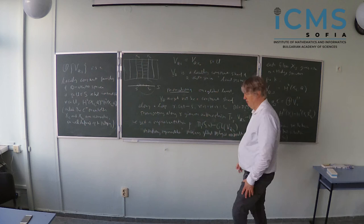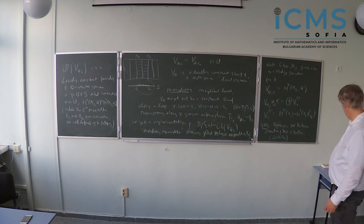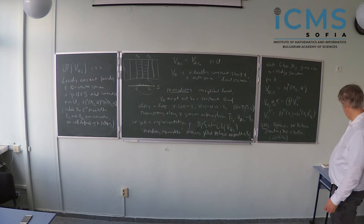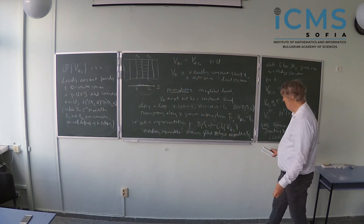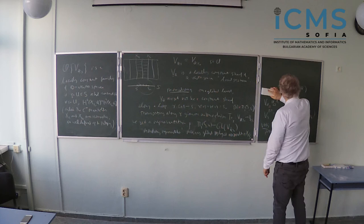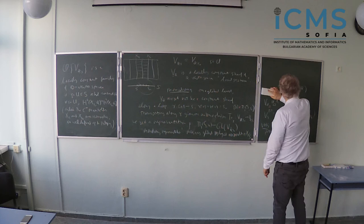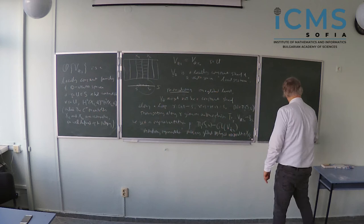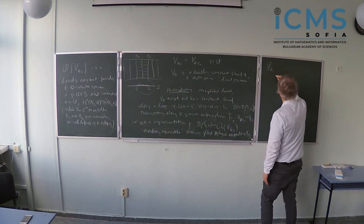So that's the first part of our variation of Hodge structure — this is just what we can say by looking at the family of Q-vector spaces. There is already something non-trivial happening just with the family of Q-vector spaces on a global level. On a local level it's just constant.